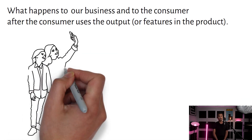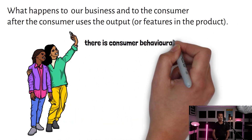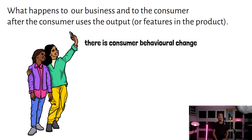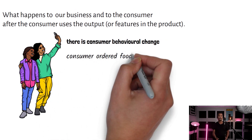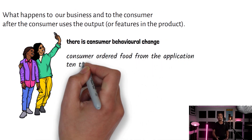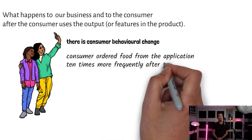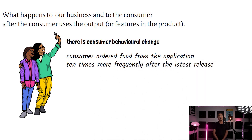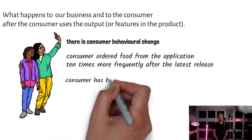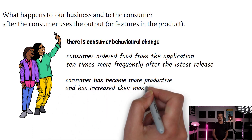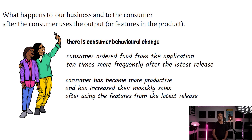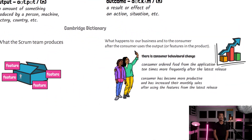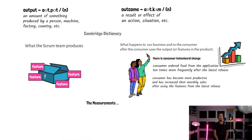When there is outcome from the product, there should be a behavioral change from the consumer, and this behavioral change should be observable. For example, a consumer outcome is when the consumer has ordered food from the application 10 times more frequently after the latest release. Another example of outcome is when the consumer has become more productive and has increased their monthly sales after using the features from the latest release.